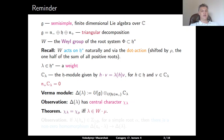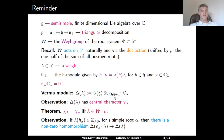We proved the theorem that χ_λ = χ_μ if and only if λ belongs to the W-orbit of μ with respect to the dot action of the Weyl group. In the proof, we used the observation that if λ(H_α) is a non-negative integer for a simple root α, then there is a non-zero homomorphism from the Verma module Δ(s_α · λ) to Δ(λ).